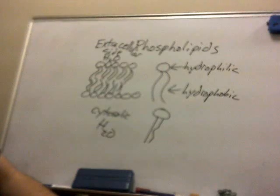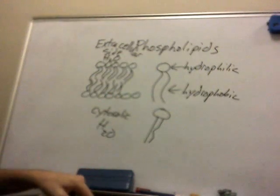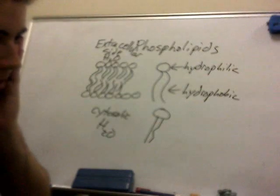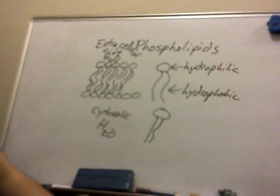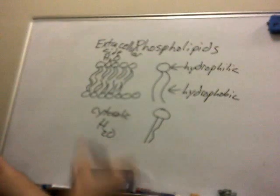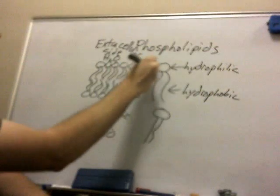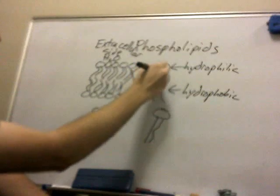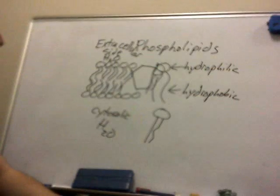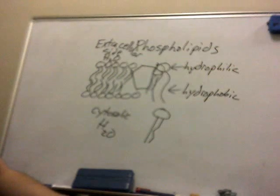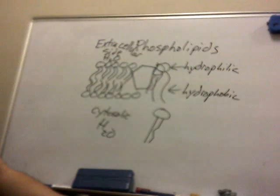Cholesterol also creates steric hindrance and aids in cell membrane fluidity by simply being present — it creates spaces between the phospholipids, allowing them to be further apart. This is regulated by temperature and a few other environmental factors.